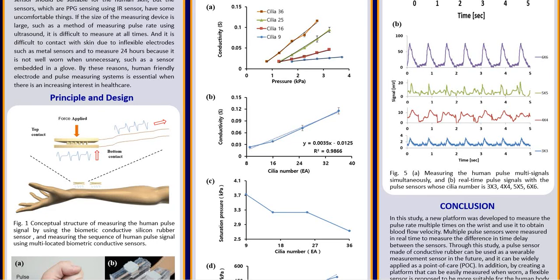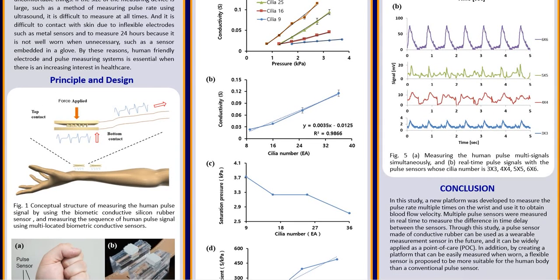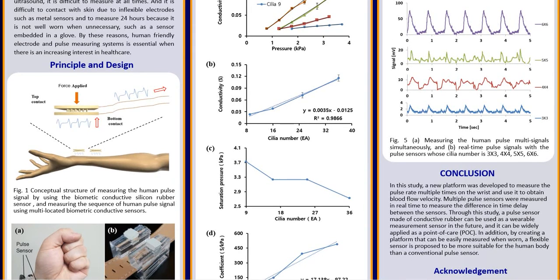The stronger the pressing pressure, the higher the electrical conductivity, and the greater number of cilia, the greater the rate of change. However, when the number of cilia is high, it tends to be saturated more quickly. And using this, we are able to create a sensor optimized for blood flow velocity measurement.